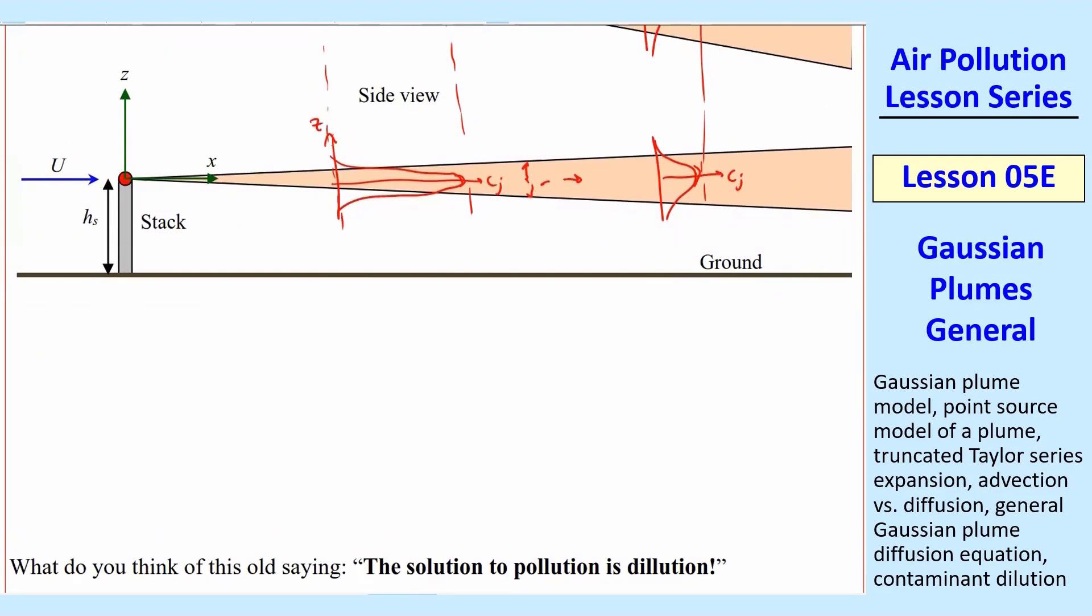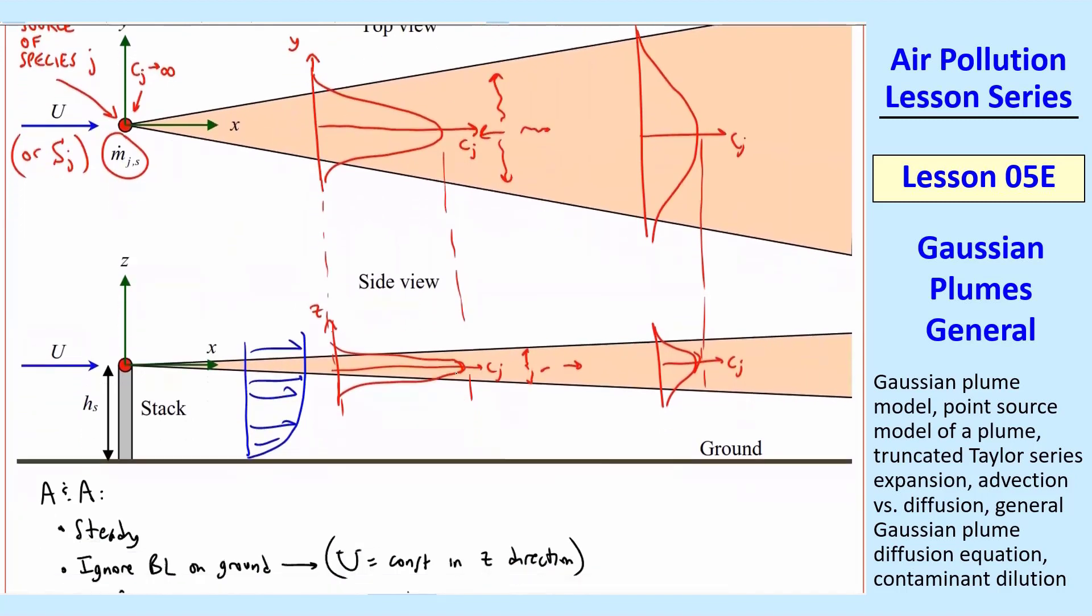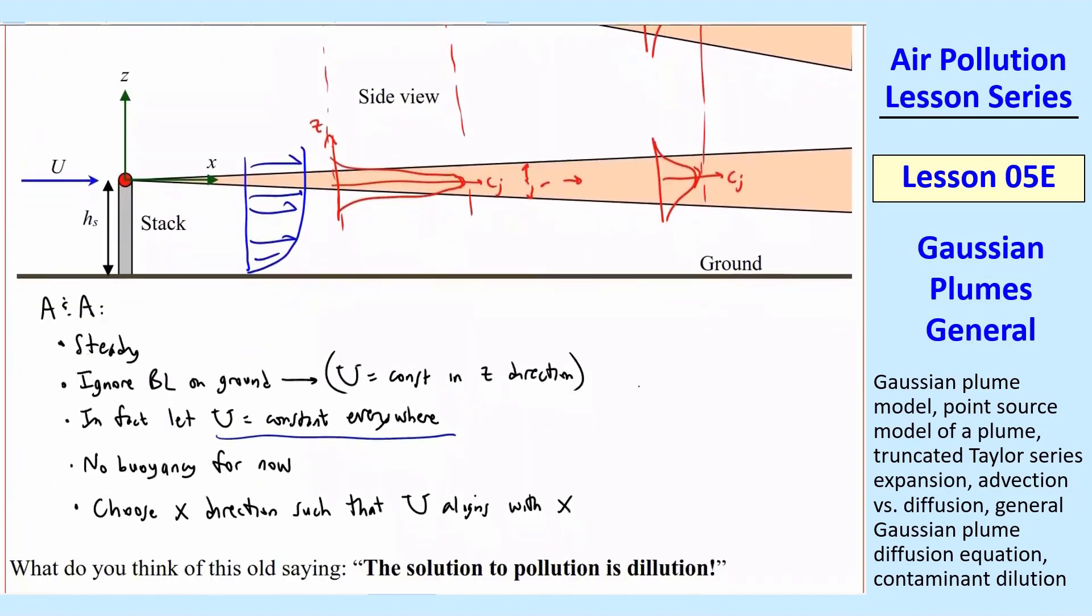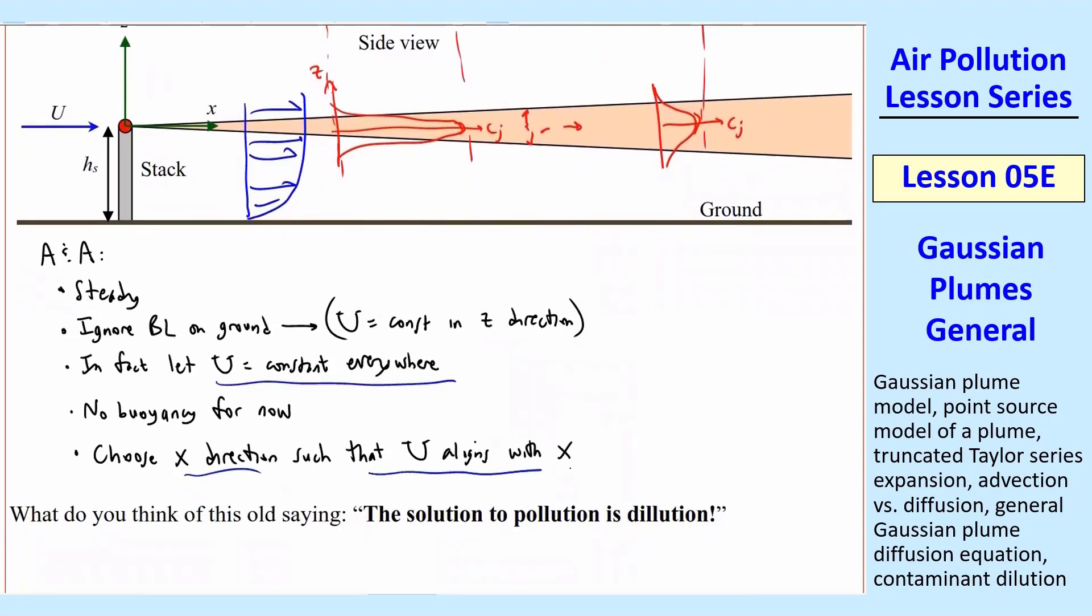We're going to have to come up with some mathematical expressions for this and an equation. So the first thing I'm going to do is list some approximations and assumptions. First one is that it's steady. We'll leave some unsteady terms in when we derive this, but we'll later let it be steady. We're ignoring the boundary layer on the ground. Our stack is usually way up high where U is pretty constant—not just in the Z direction, but we're going to let U equal constant everywhere. We're assuming flat ground. No buoyancy for now. And we always choose the X direction such that U aligns with X.